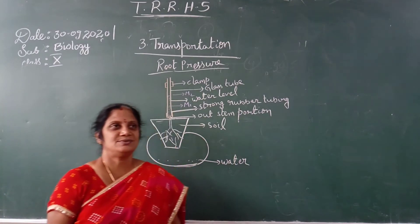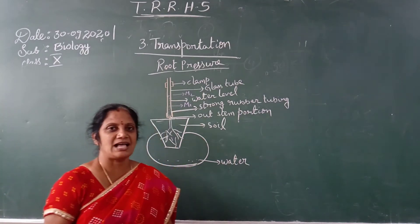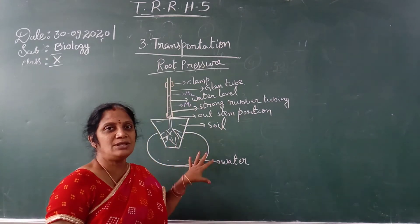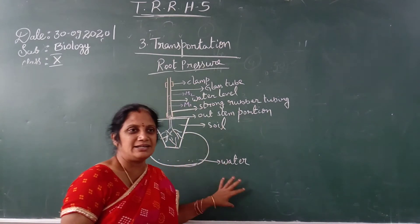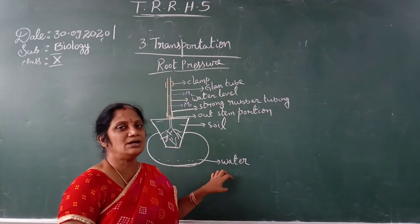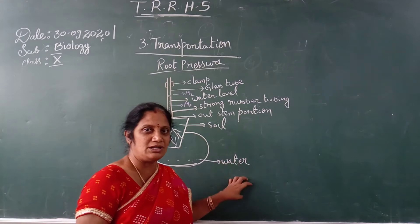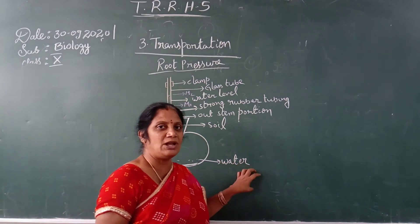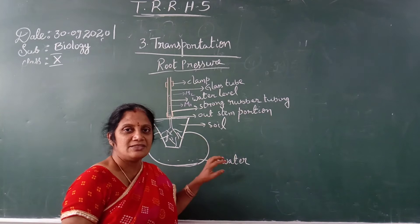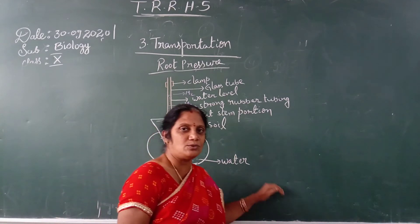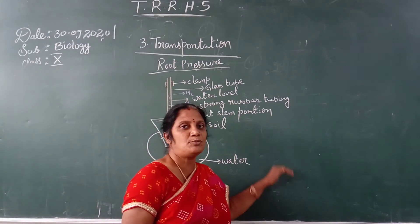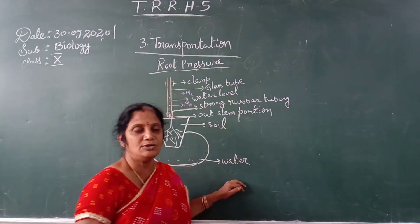Important students, in yesterday's class we discussed about the transportation plan — how water attaches to the cell. Today we will discuss how root pressure helps water move in an upward direction. The pressure that causes water to be transported to the topmost level is called root pressure.